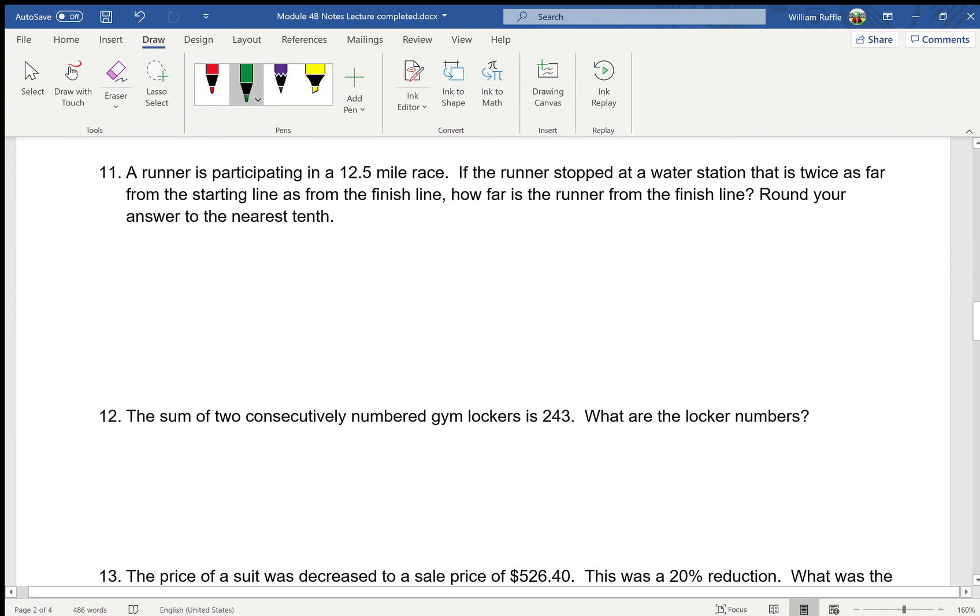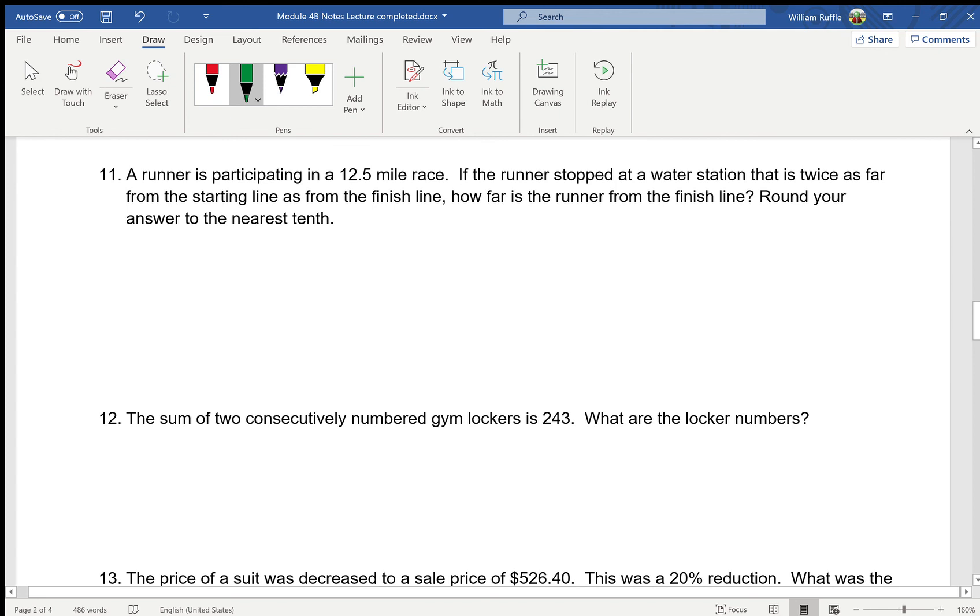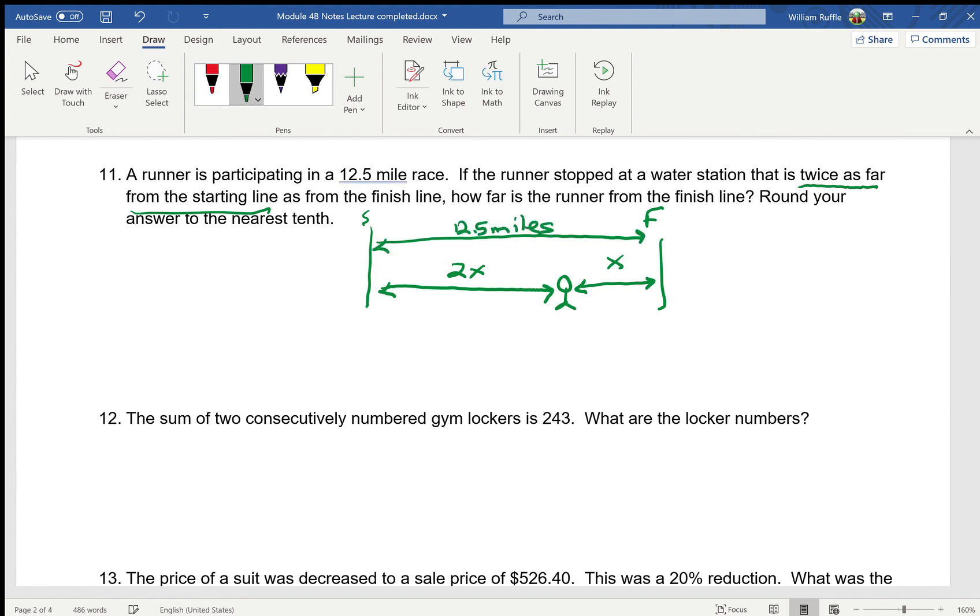Okay. And the last question in this first part here, we have a runner. He's got a 12.5 mile race. Now I like to draw a little diagram here. Here's the start. There's the finish. We have our little runner here. He stopped at a water station that is twice as far from the starting line as from the finish line. So now, from here to here, we don't know that distance, so we're just going to let it be x. Now it's saying he stopped at a water that is twice as far from the starting line. So if I go from here to here, that's twice as far as this part. So twice that is just 2x. And now I know the whole race from here to here is 12.5 miles. So if I look at the picture, 2x plus x must equal 12.5.